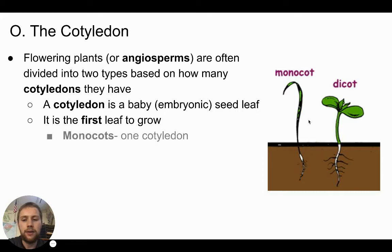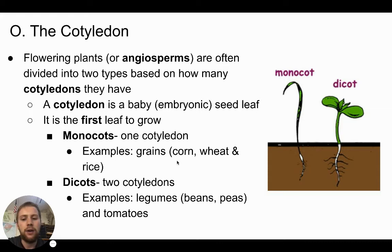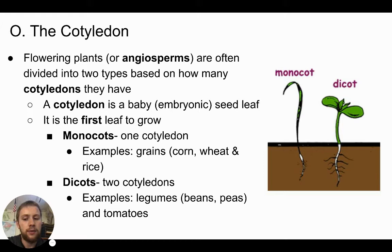Monocots have one cotyledon, and dicots have two cotyledons. Examples of monocots include all our grains — corn, wheat, and rice. Legumes, in the bean and pea family, are dicots, as are tomatoes, which is an important crop we're actually going to be growing starting later this week. Virtual students, stay tuned for demonstration videos and potentially data you could follow along with and graph as part of this lab.